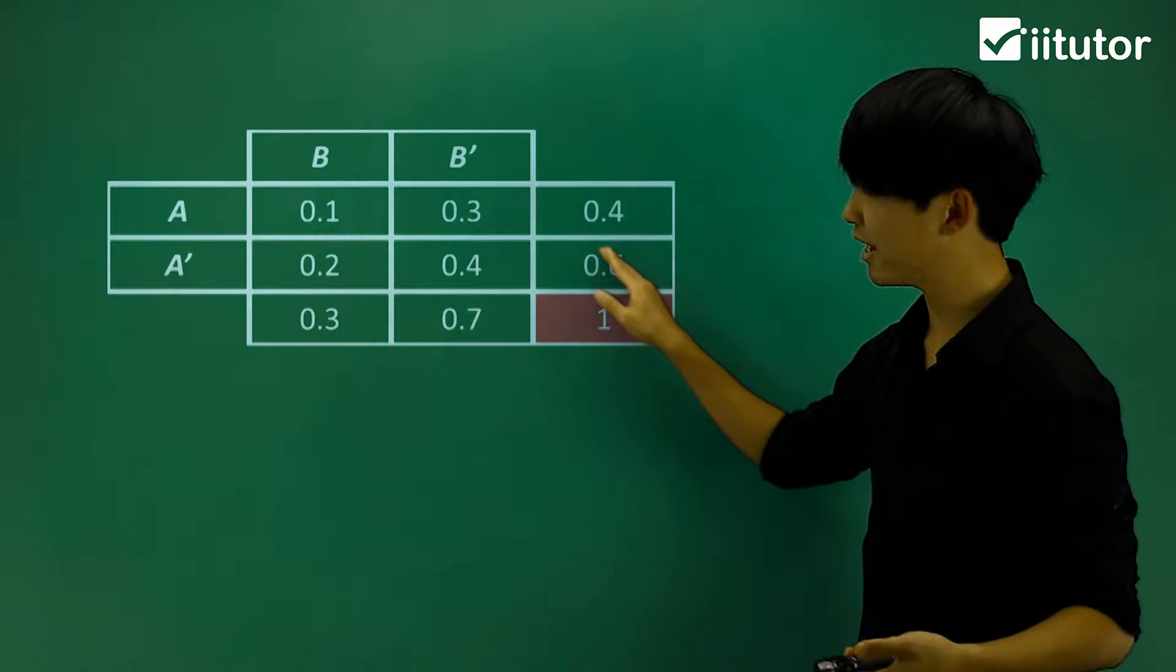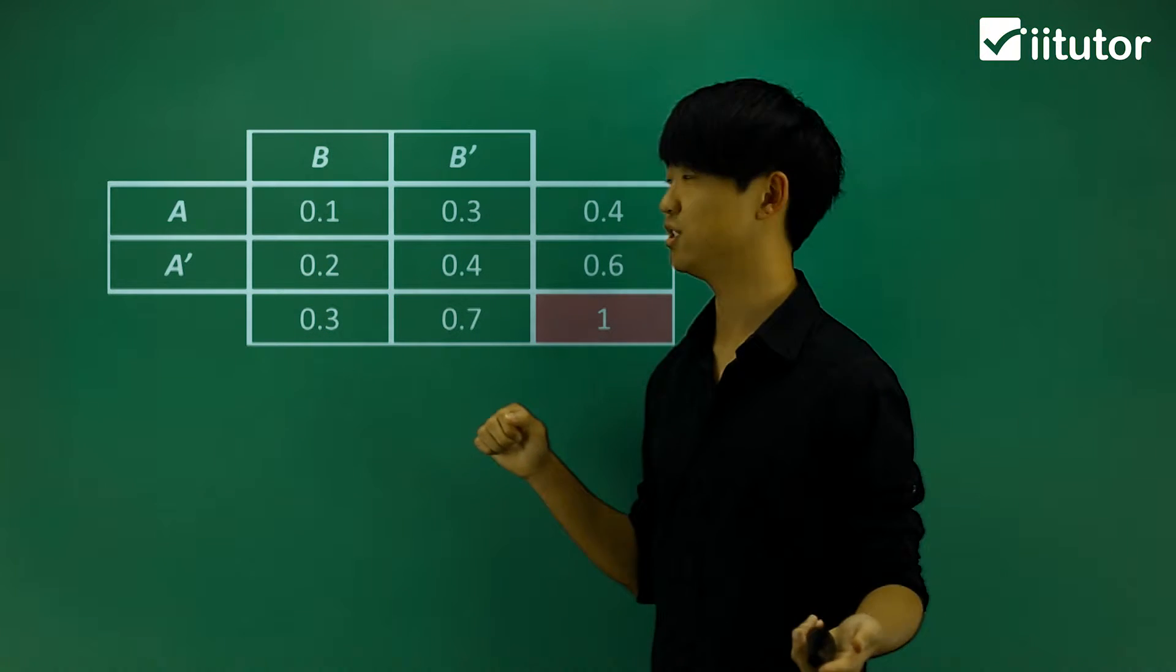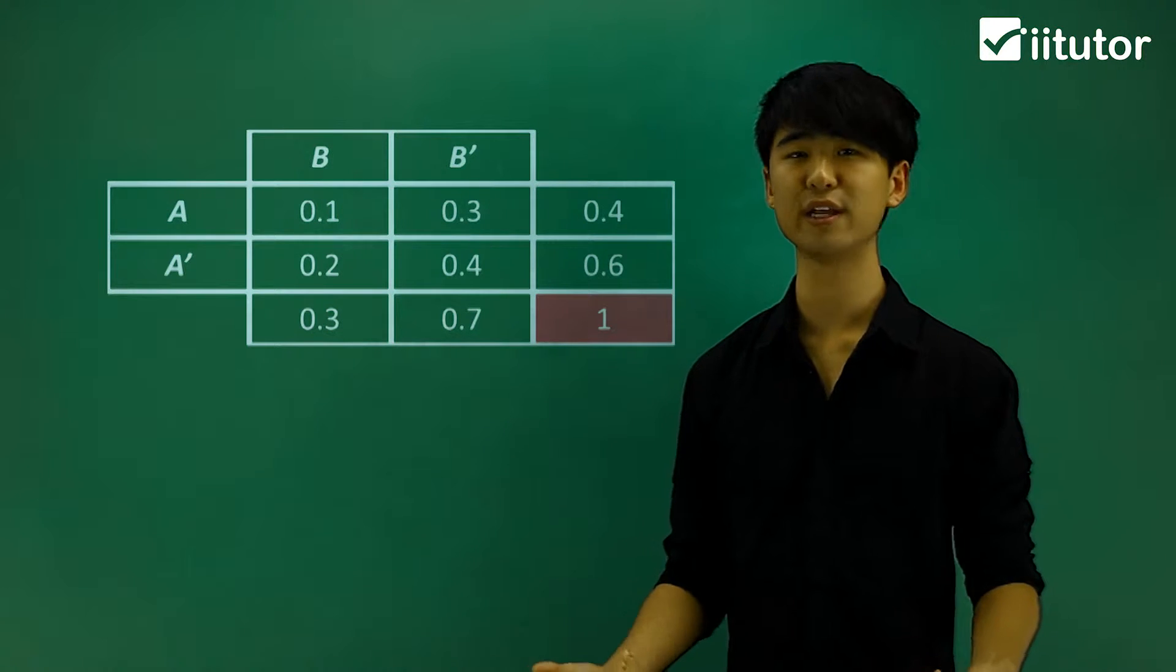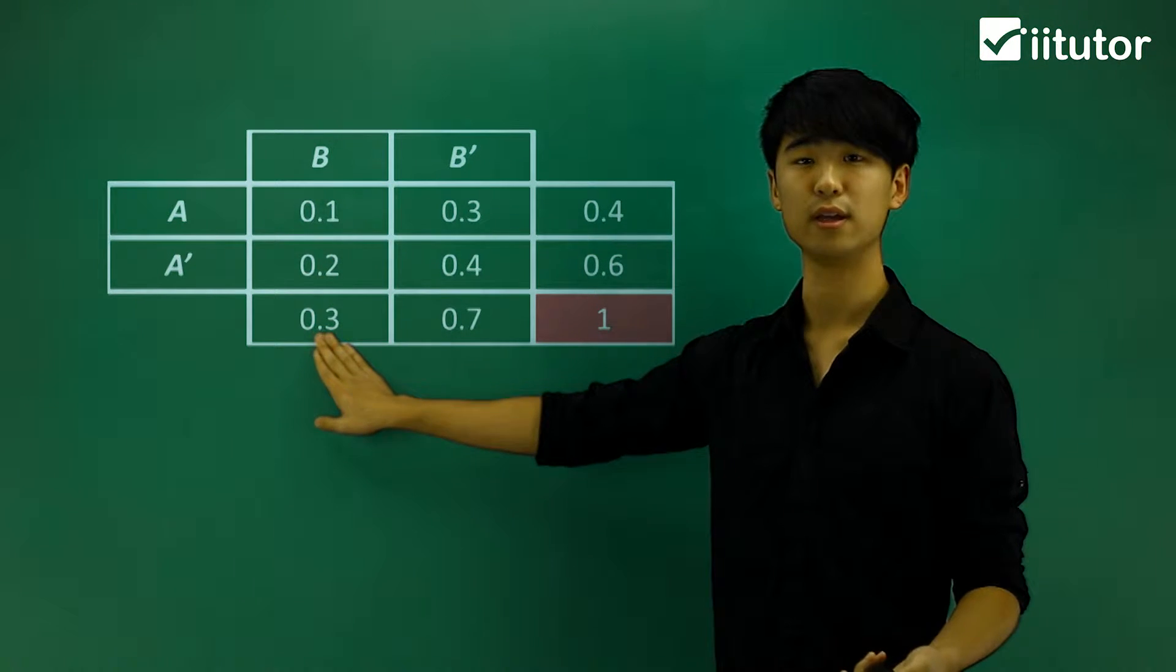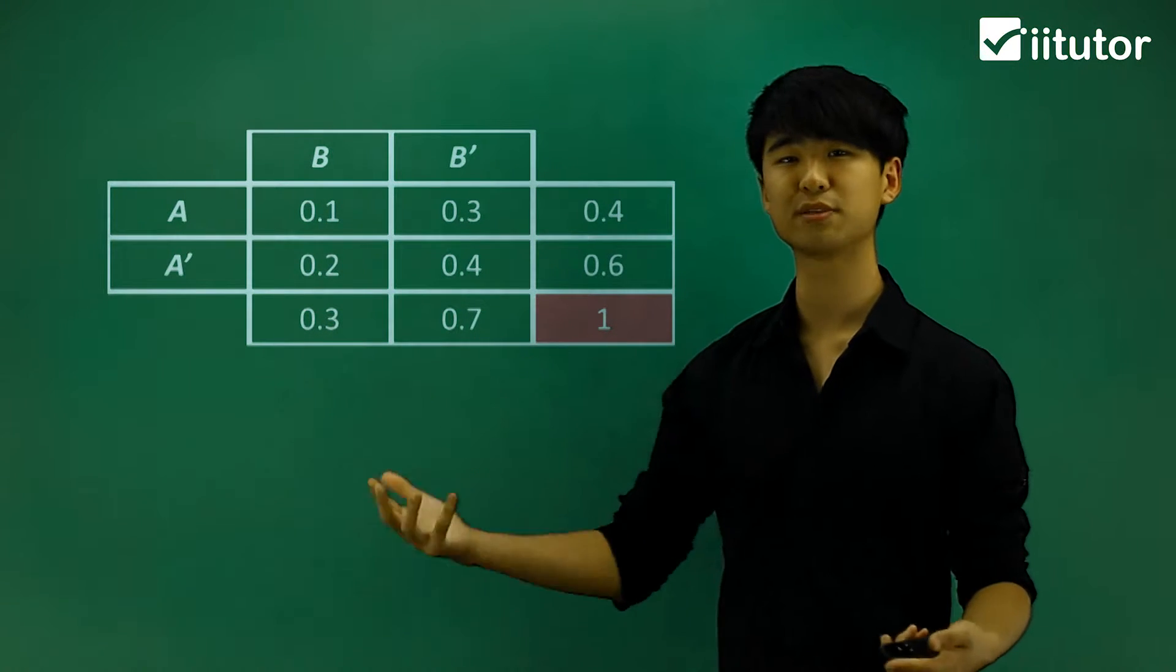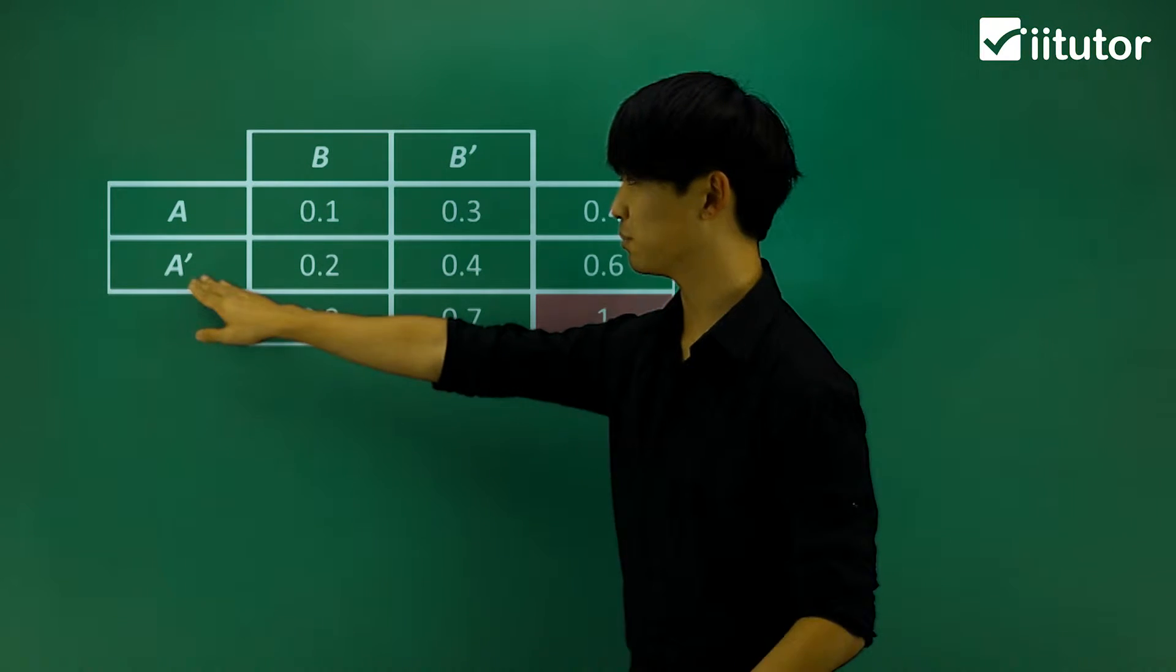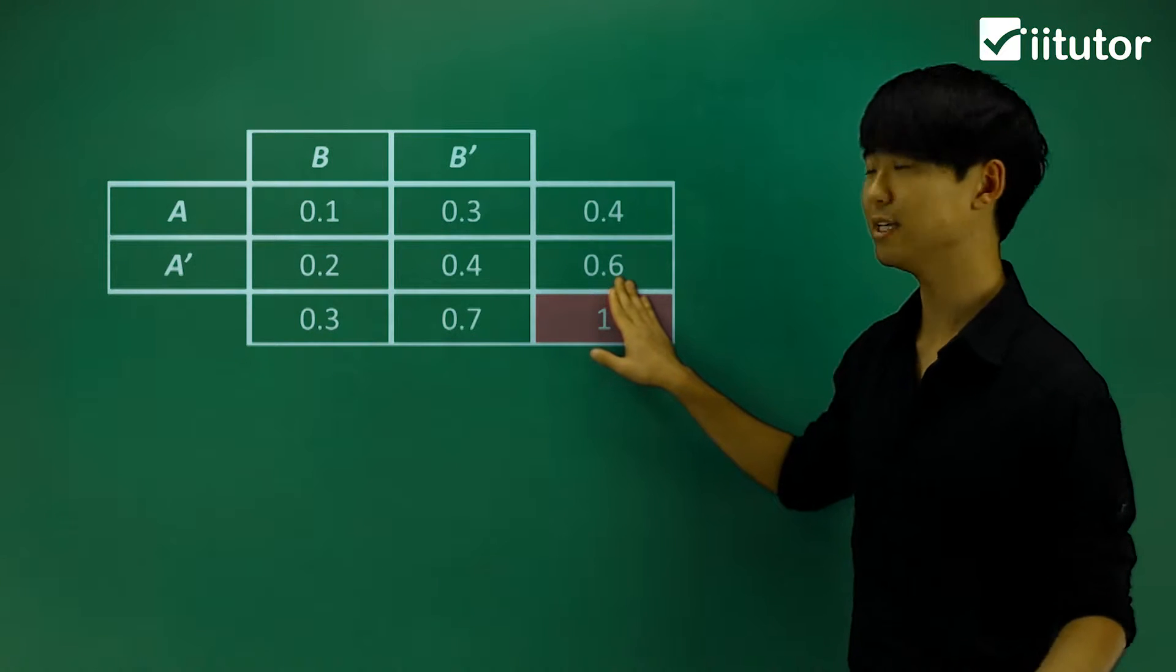These ones on the outside are when it doesn't matter about these events here. If I ask you, what is the probability of event B occurring? Event B, that's just simply 0.3. We don't care about the other ones. If I want to ask you what is the probability of the complement of A happening, I don't care about these ones, then this is the event of complement A happening, 0.6.